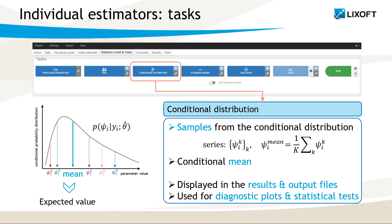The second task samples the conditional distribution. Each sample represents an individual parameter and their average is the conditional mean, which is displayed in the interface and is written in the output files as S4EBs. The main purpose of sampling the conditional distribution is to increase the diagnostic power of plots and to perform statistical tests.